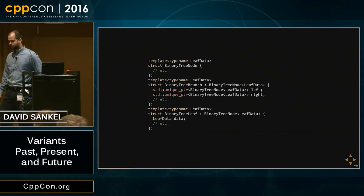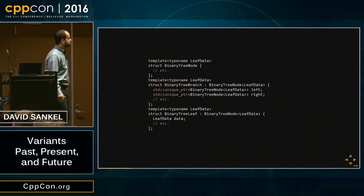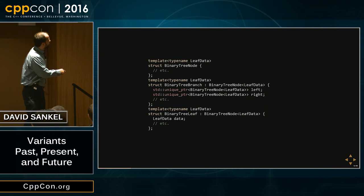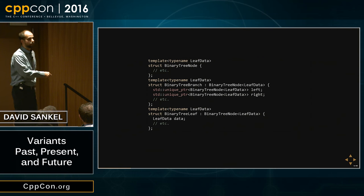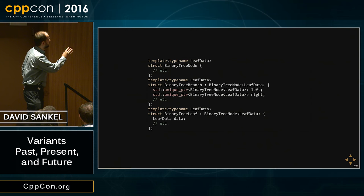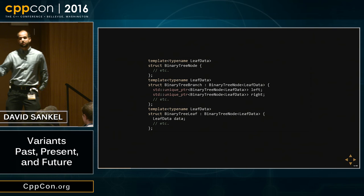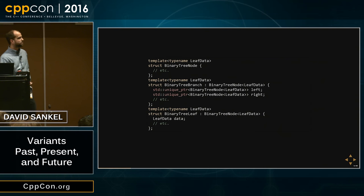The third example is a simple binary tree. It's recursive because if you have a branch, both branch and leaf inherit from the base class, and branch refers back to the tree node. I'm not going to go into this example right now — we'll get to it later — but keep it in mind, as this is another thing you should be using variant for.